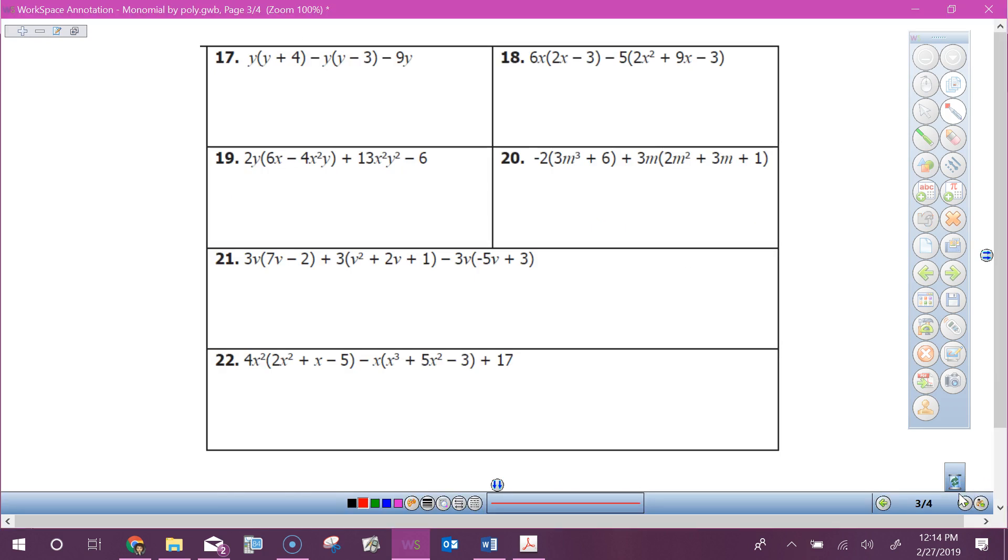Last one, look at number 21. I have got three things I gotta multiply, so 3v times 7v gives me 21v squared. And what? Minus 6v.